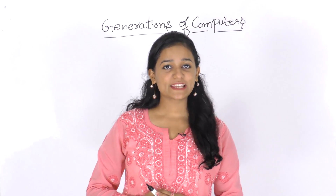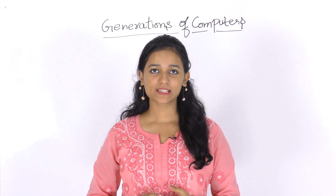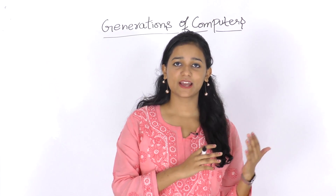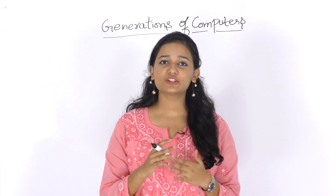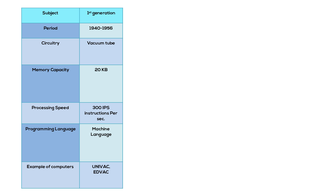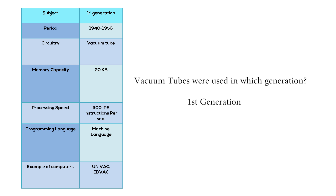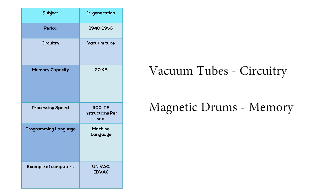Now let's move on to the generations of computers. A generation refers to the state of improvement in the product development process, and by generations of computers we mean the transition from earlier devices to today's smart devices. You will see a table categorizing generations by their properties. For example, vacuum tubes were used in the first generation. In the first generation, computers used vacuum tubes for circuitry and magnetic drums for memory.